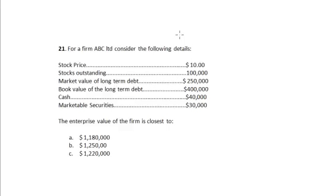For a firm ABC limited, consider the following details: the stock price is $10, the stocks outstanding is one lakh (100,000), the market value of the long-term debt is $250,000, the book value of the long-term debt is $400,000, the cash is $40,000, and the marketable securities is $30,000.